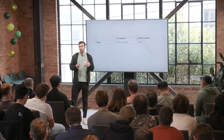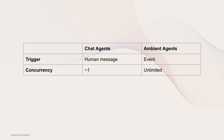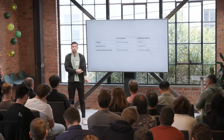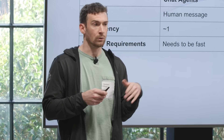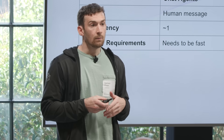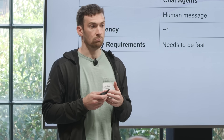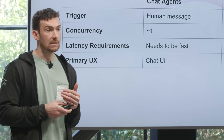First, what are the triggers? It's no longer a human sending a message — it's an event that happens in the background. Second, how many can be running? With chat, you generally interact with one agent at a time. With ambient agents, because they're listening to events, it's however many events are happening — a far bigger number. Third, latency requirements: with chat you expect a quick response, but ambient agents run in the background triggered by events, so they can run for much longer before a response is needed — generally much less strict latency requirements.